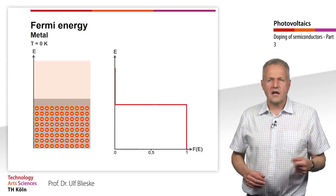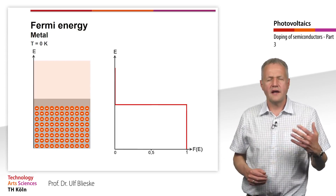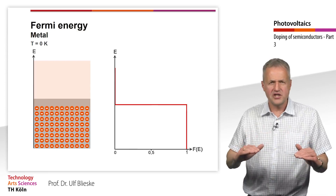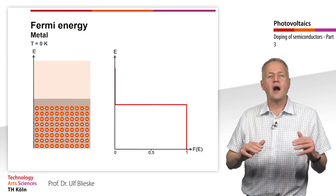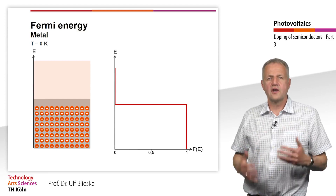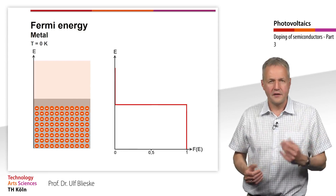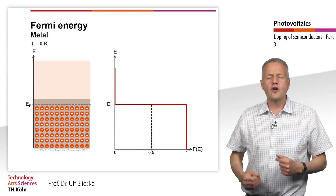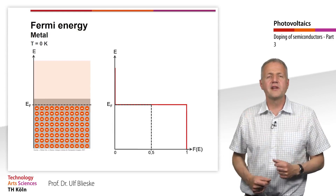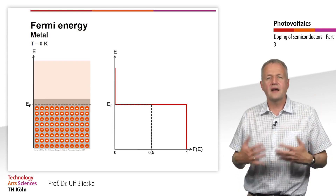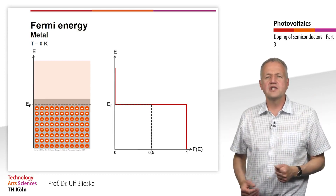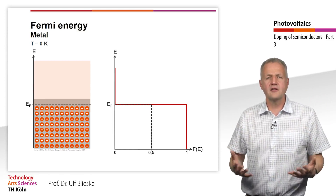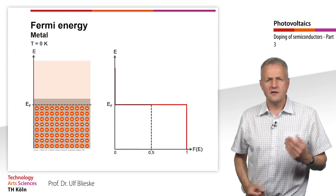In the conduction band, all energy states with low energy are occupied, so the occupation probability is 1. Above the Fermi level, the occupation probability jumps to 0. Thus, the Fermi energy corresponds to the highest occupied energy level in a metal at 0 K.